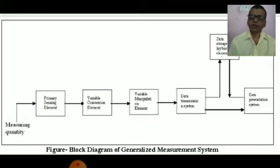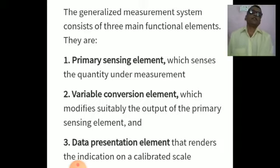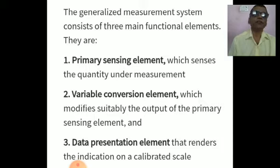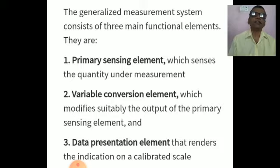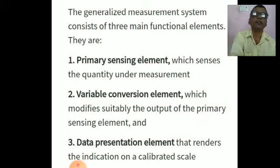Most measurement systems contain three main functional elements. First is the primary sensing element, which senses the quantity under measurement. Second is the variable conversion element, which modifies suitably the output of the primary sensing element produced by the transducer. Third is the data presentation element, which renders the indication on a calibrated scale and presents the data. These are the three main functional elements of the generalized measurement system.